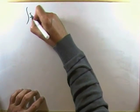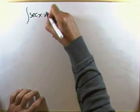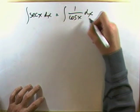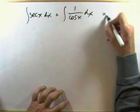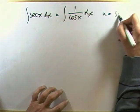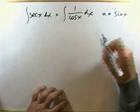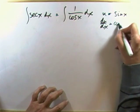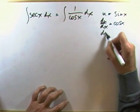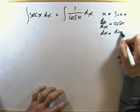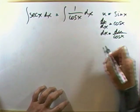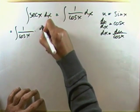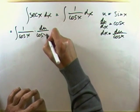So I've got the integral of sec x dx, which means 1 over cosine of x dx. For that I can use a substitution: let u equal sin x, so du/dx equals cos x, or in particular dx equals du over cos x. That means I've got the integral of 1 over cos x times du over cos x.